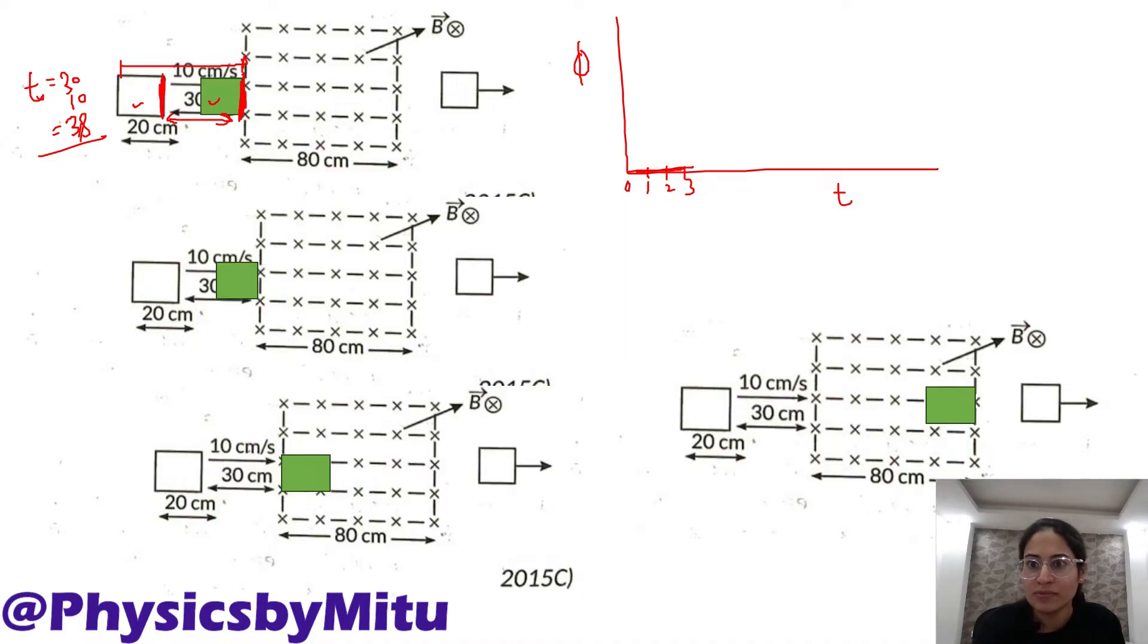Now when it goes from this position to this position, you can see that the field lines passing through the square loop are increasing. Magnetic flux is increasing when it goes from this position to this position. Field lines, they grow up, increase when it is entering.